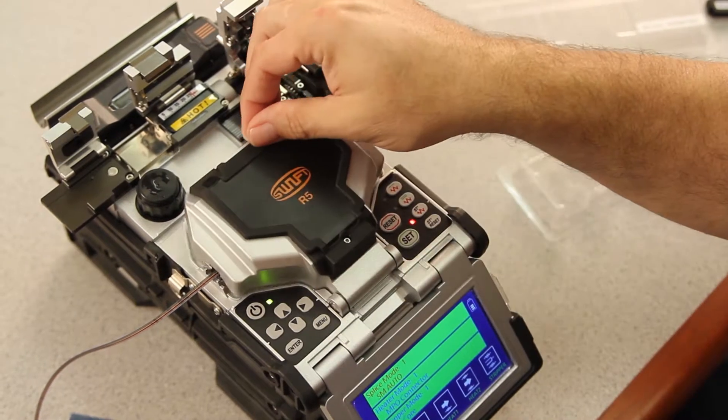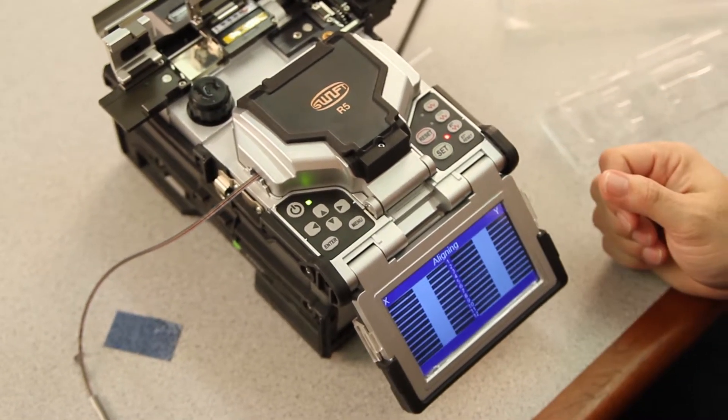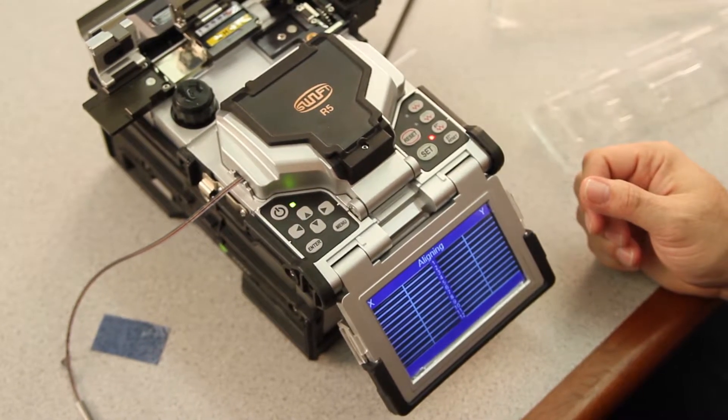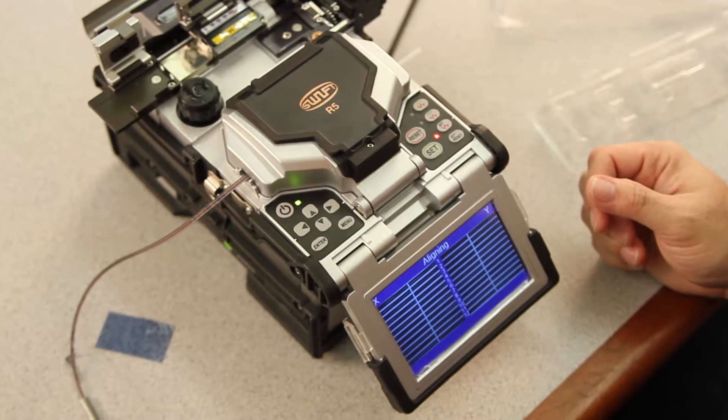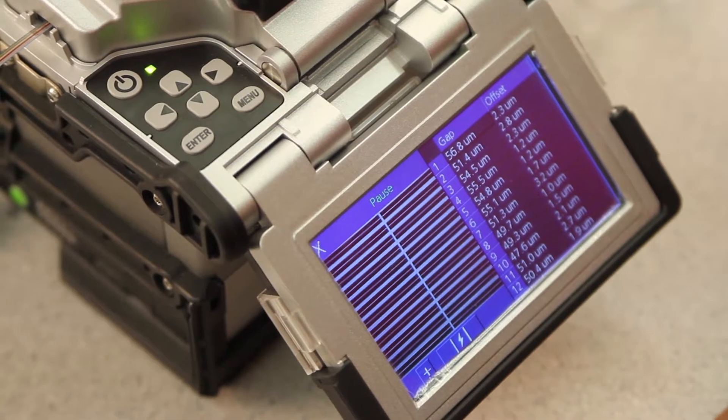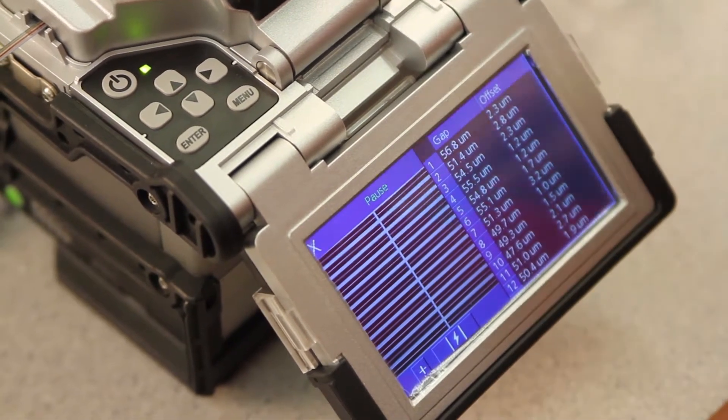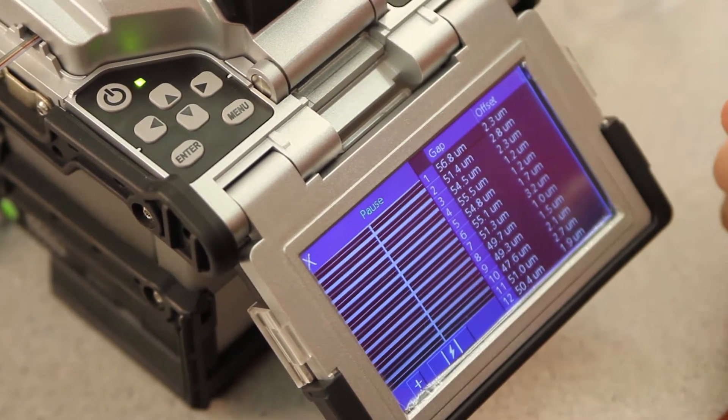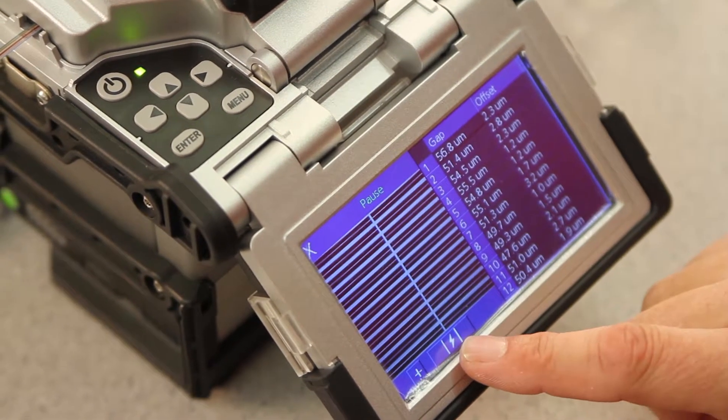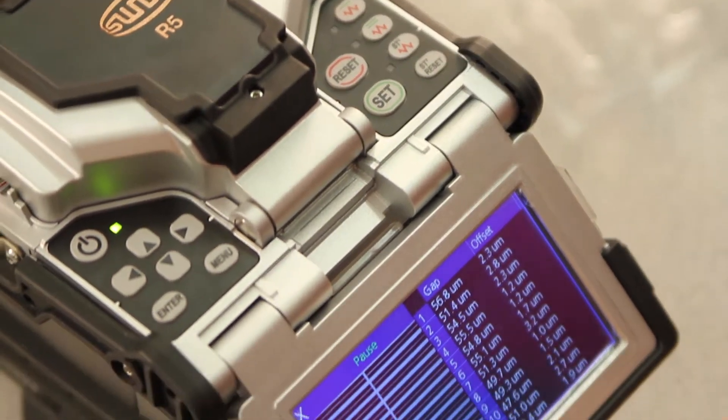Close your wind cover and allow your fiber to align. Once you've come to your pause, make sure your gaps and your offsets are okay. If they are not, they will be red. If they are okay, you can either press your lightning bolt or your set button to start the process.